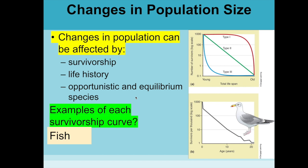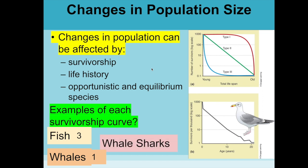For examples: fish follow Type III survivorship — a ton of eggs or baby fish are released, many die right at the beginning, but once they get big enough they're likely to survive. Whales follow Type I — lots of parental care, and they'll die off at a certain old age. Whale sharks are more Type II — babies are born fairly large and mostly able to care for themselves, with roughly equal chances of living or dying at any particular time.